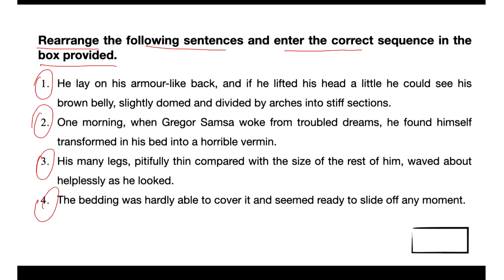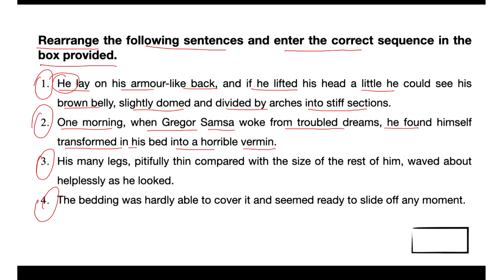We need to put them in a proper order. The first sentence says: 'He lay on his armor-like back, and if he lifted his head a little he could see his brown belly, slightly domed and divided by arcs into steep sections.' The second sentence states: 'One morning when Gregor Samsa woke from troubled dreams, he found himself transformed in his bed into a horrible vermin.' So here we find out that 'he' refers to Gregor Samsa.